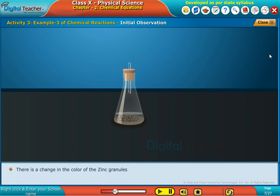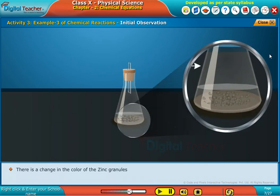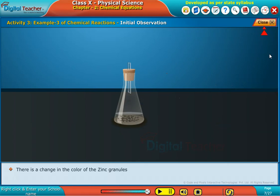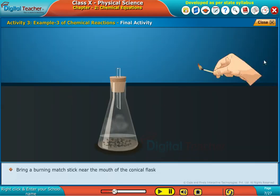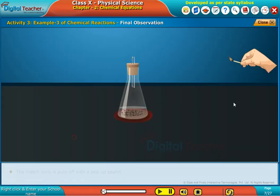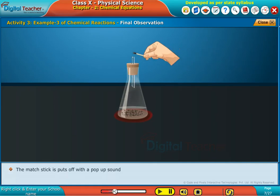There is a change in the color of the zinc granules. Bring a burning matchstick near the mouth of the conical flask. The matchstick is put off with a pop-up sound. The beaker is warm when touched with a finger.